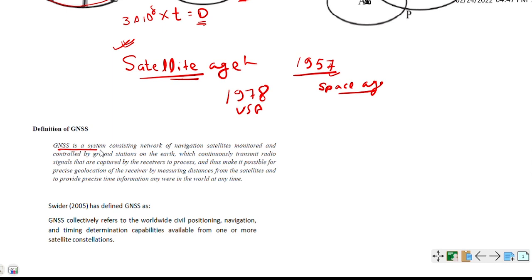GNSS is a system consisting of a network of navigation satellites monitored and controlled by ground stations, that is a component of GNSS on the earth, which continuously transmit radio signals that are captured by the receivers, that is also a component of GNSS. We shall see how the components of GNSS and how it works in the next videos.